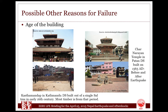The age of the building is also another main reason of failure. For example, Kastamandap in Kathmandu Darbar Square, from where the name of Kathmandu was derived, was built in the early 16th century from the wood of a single tree. It is said that most of the timbers were from that period. The earthquake caused several damages to the temple and its ultimate collapse. Similarly, Char Narayan Temple, also called Jagan Narayan Temple, perhaps the oldest temple in Patan Darbar Square built in 1565, was also completely collapsed in this earthquake.